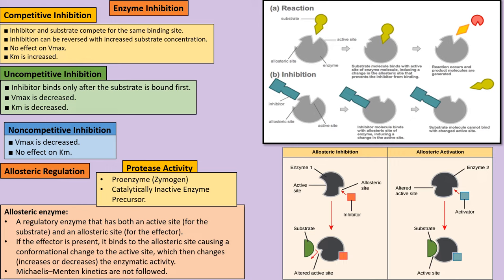Protease enzymes break down inactive proenzymes into their active form. These inactive precursors are called zymogens. For example, trypsinogen is a zymogen — an inactive enzyme activated by protease into trypsin, which is a protein-breakdown enzyme.